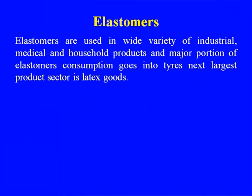This lecture will cover elastomers: styrene butadiene rubber, polybutadiene, nitrile rubber, and other specialized rubbers. Elastomers are used in a variety of industrial, medical, and household products, and the major portion of elastomer consumption goes into tires. There has been a revolution in synthetic rubber manufacture worldwide due to the large number of petrochemical complexes and availability of raw materials, which earlier came through the non-petrochemical route.